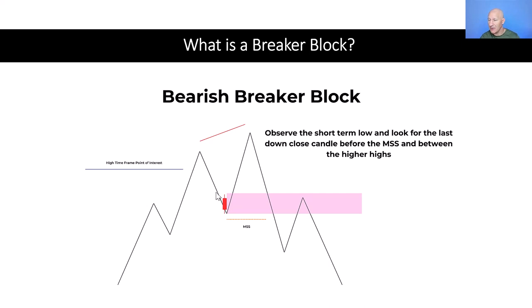So in this example, the market is trading higher, we take out that point of interest, and we then get a pullback. So we create a high here after we've taken out that high time frame point of interest. And then the market pulls back before trading higher again. So you can see we create a higher high with this next push, and the market then pulls back below the short term low, which gives us our bearish market structure shift.